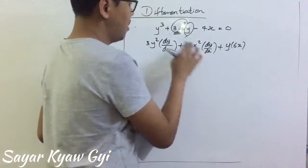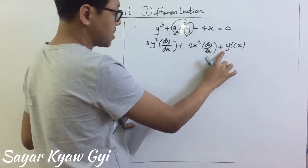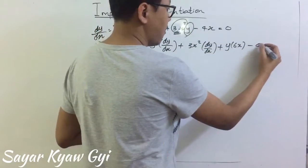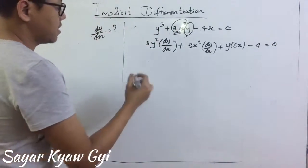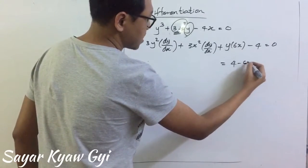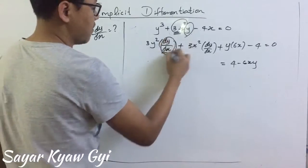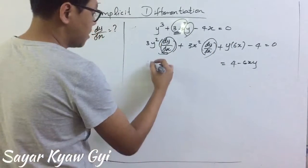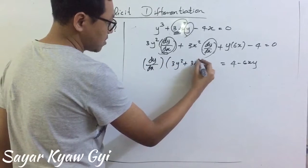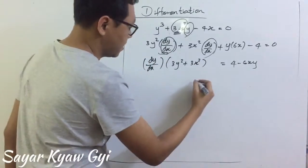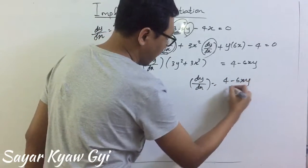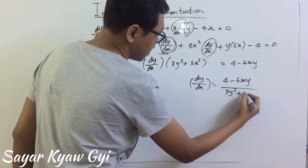So we have 6x, then minus 4 equal to 0. Then 4 will be positive 4, and this one will be negative 6xy. We are going to factor out the common factor for dy by dx. What is left here is 3y squared plus 3x squared. Then we define dy by dx equal to 4 minus 6xy over 3y squared plus 3x squared.